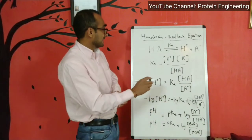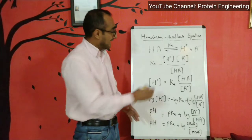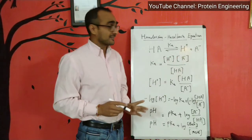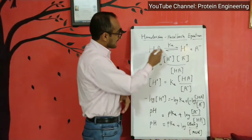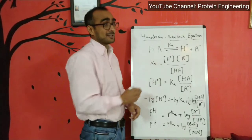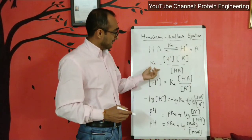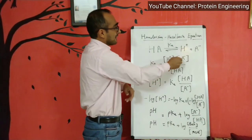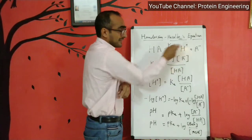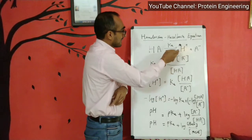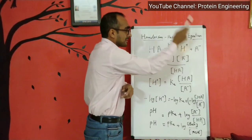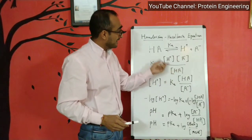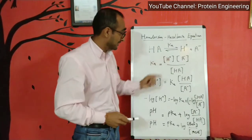Let's see one example. You have a weak acid HA which dissociates in solution giving rise to H⁺ ions and A⁻ ions. From this, KA is the dissociation constant. KA would be calculated from the law of mass action: KA equals H⁺ ion concentration times A⁻ concentration divided by the concentration of HA, the acid being dissociated. A⁻ is basically the conjugate salt.